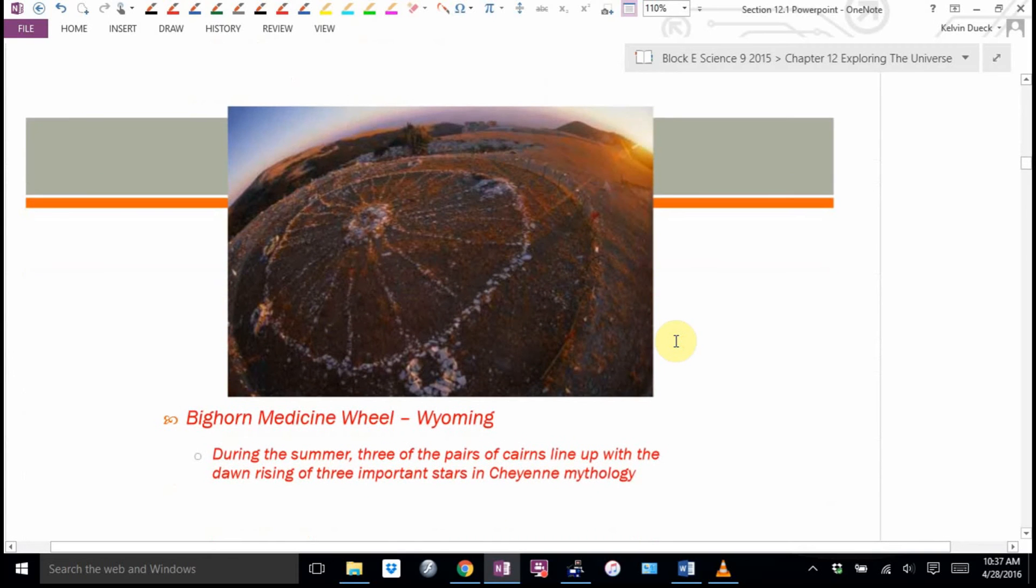This is the Bighorn Medicine Wheel in Wyoming. So during the summer, three of the different big stacks of rocks, they line up with the dawn rising of three important stars from Cheyenne mythology.